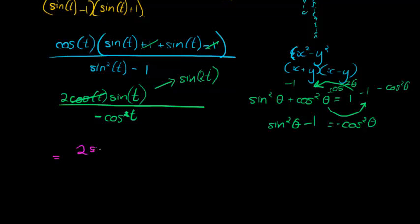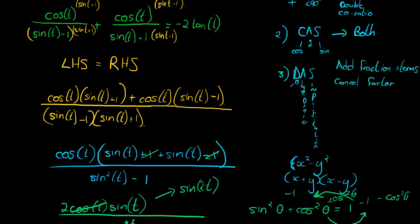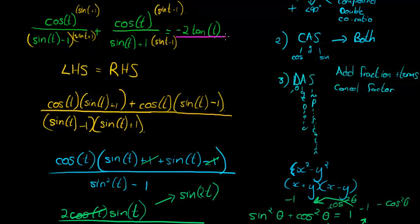So there's actually two factors of cos in the denominator. They divide into each other to leave me with 2 sin t over negative cos t. And this sin t over cos t, well, let's start with the constants. 2 divided by negative 1 gives me negative 2. Sin t divided by cos t gives me tan t. And that is what I have on my right-hand side.